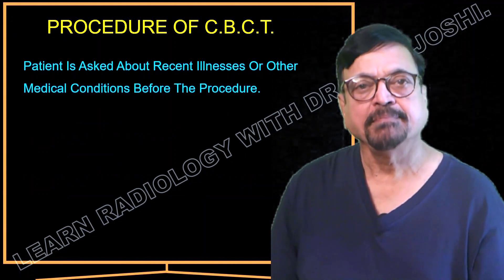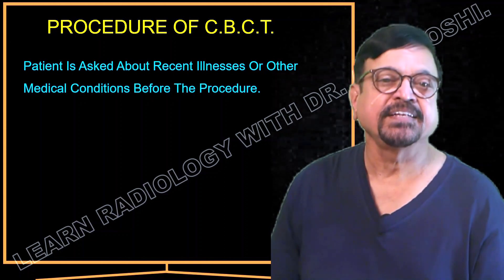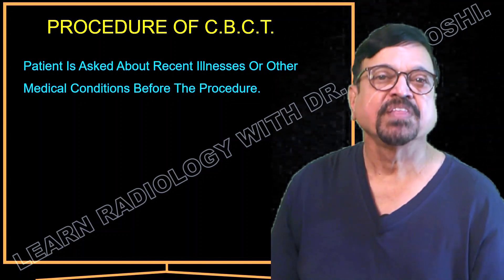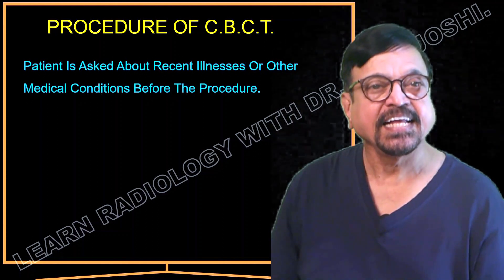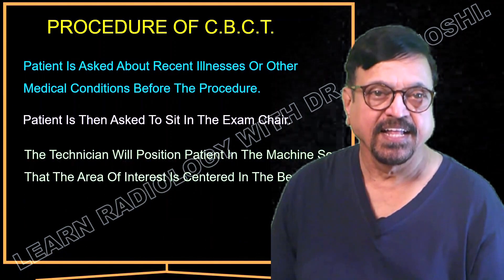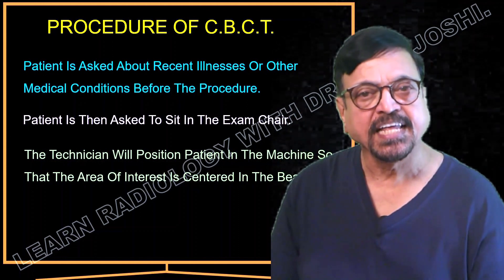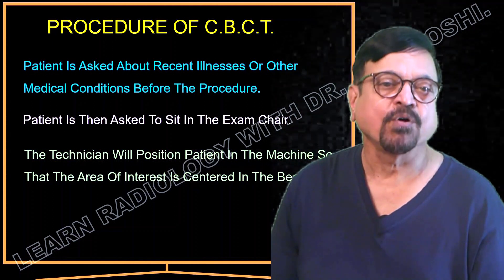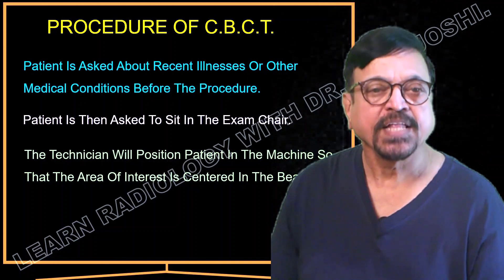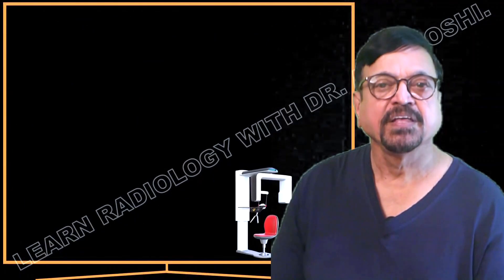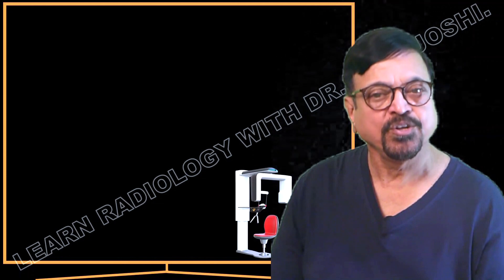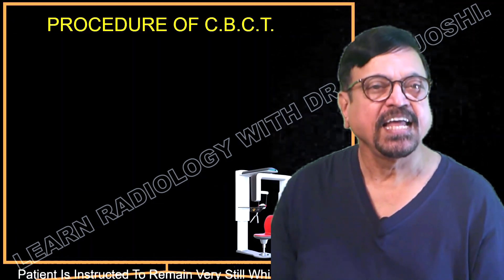For the CBCT procedure, the patient is asked about recent illnesses before starting the test. You have to check patients clinically, ask about recent illnesses, and ask whether there are any medical conditions the patient has. The patient is then asked to sit on the examination chair, and the technician positions the patient in the machine so that a collimated central beam is centered on the nose along the central line, ensuring proper undistorted images.